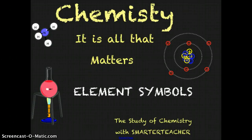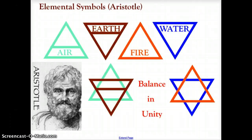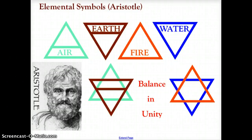The first person recorded to come up with an idea of putting symbols with the elements is usually credited to Aristotle, the Greek philosopher. Aristotle's symbols were very simple, based on the power and balance of the triangle. He was only dealing with four elements — air, earth, fire, and water — and between them he had a balance of all types of temperature or weather: hot, dry, cold, and wet. He believed that when these four elements work in balance and unity, there is harmony in the world.